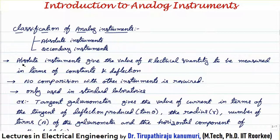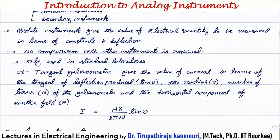The absolute instrument gives the value of the electrical quantity to be measured in terms of constants of the deflection. The reading will not be a direct value; it will be in terms of constants, and using those constant values we have to calculate the magnitude of the electrical quantity. The advantage is no comparison with other instruments is required and these instruments are more accurate than secondary types. That is why they are mainly used only in standard laboratories.